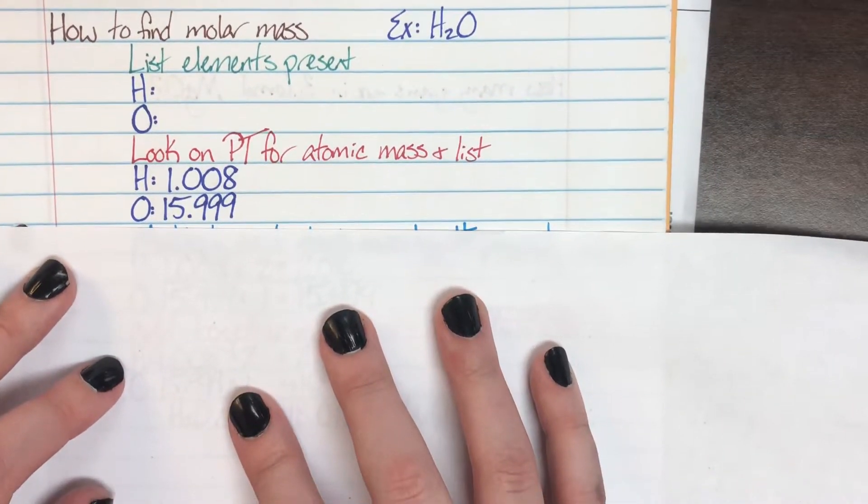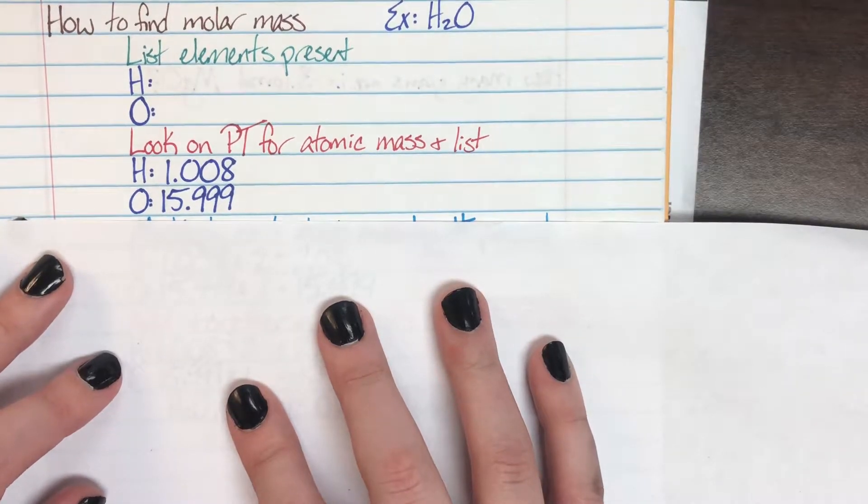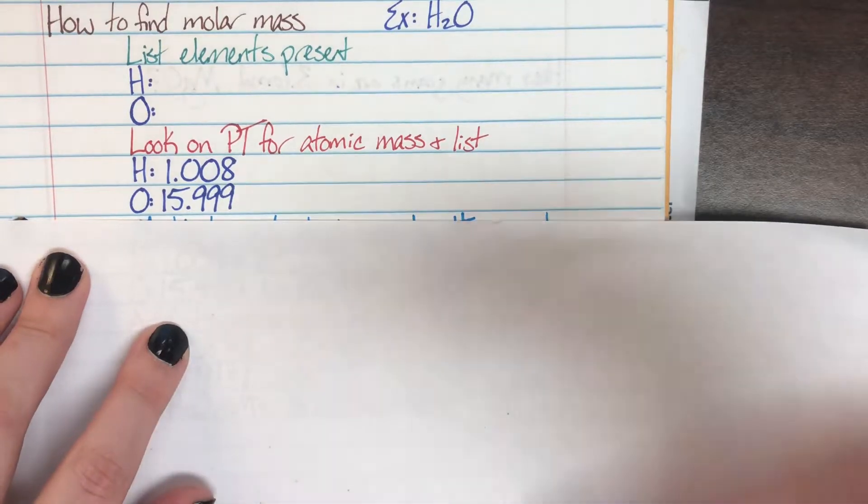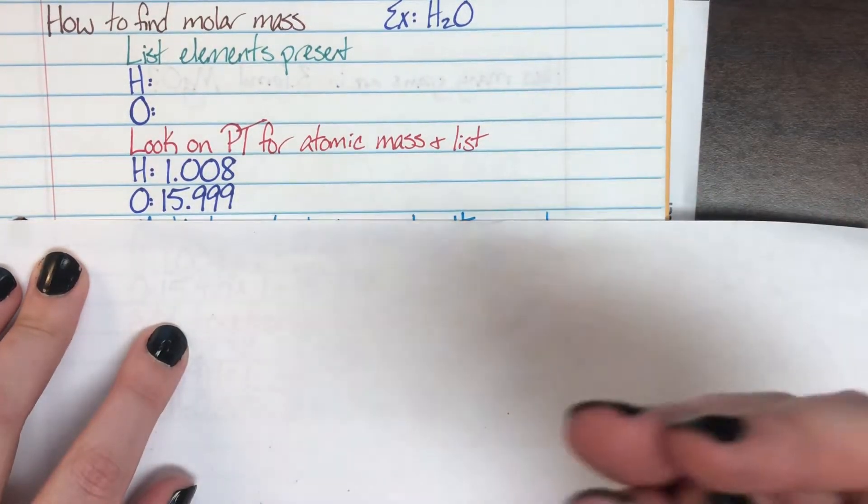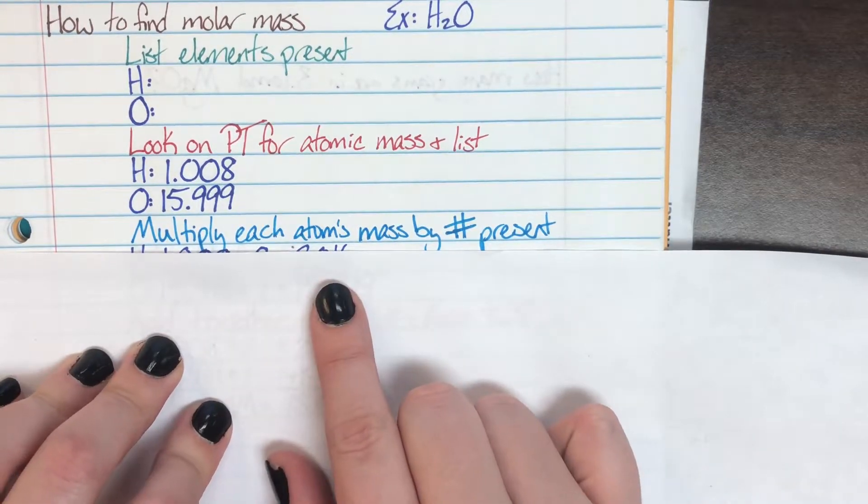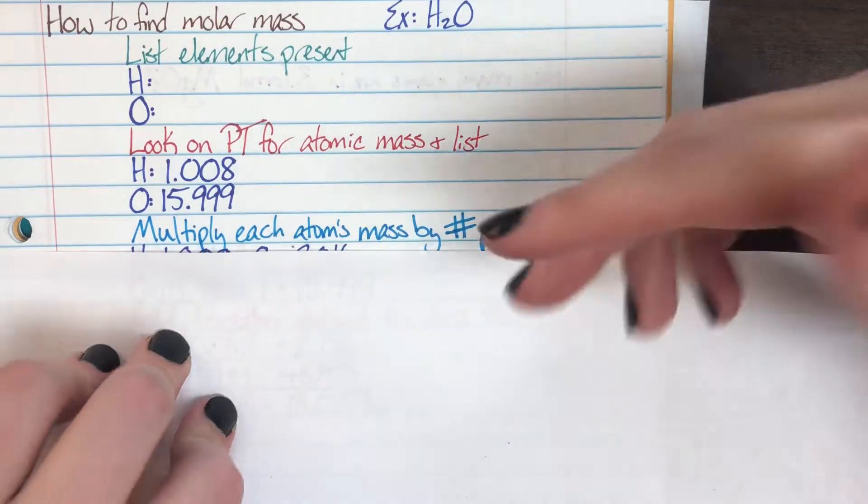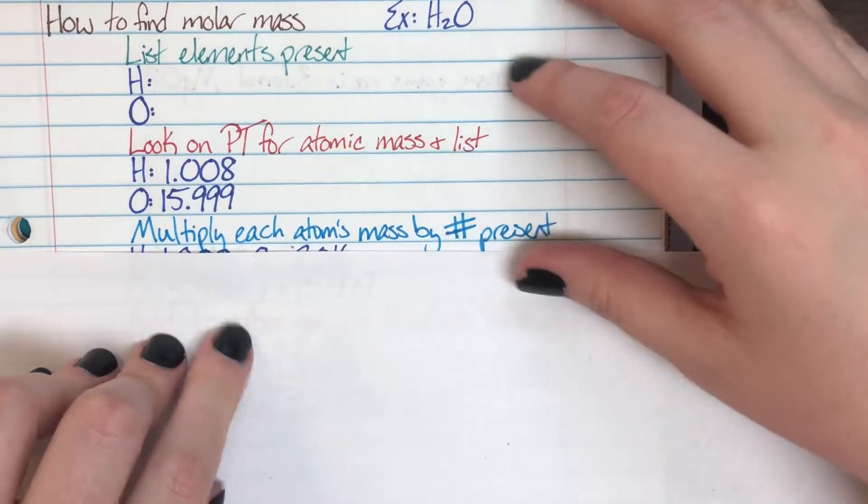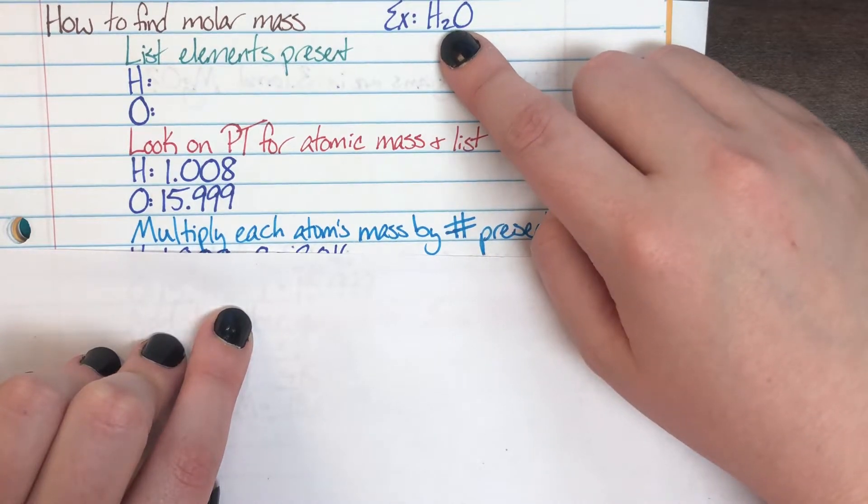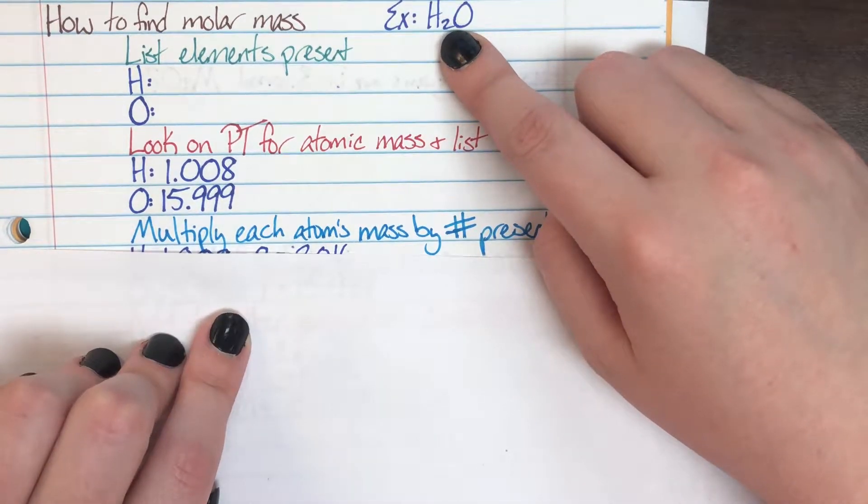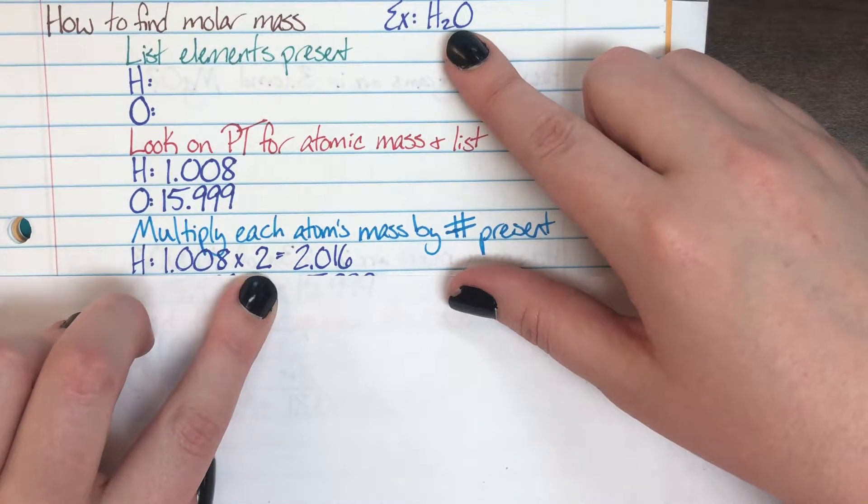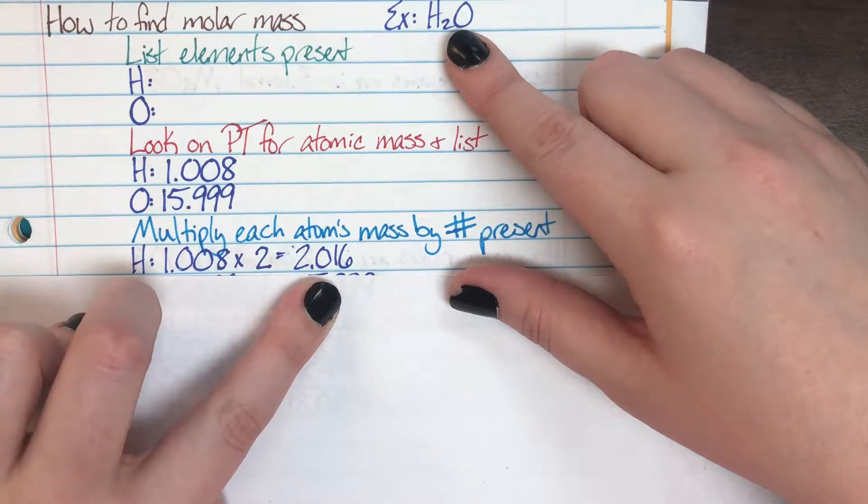Now that I have the masses for the individual elements, I'm going to figure out how much each contributes to the total mass of the compound. I do this by multiplying each atom's mass by the actual number of that element that's in the compound. Okay, so hydrogen—remember that those subscripts are counts—so hydrogen, we see that we have two hydrogens present in H2O, so I'm going to multiply hydrogen's mass by two. And I went ahead and did that calculation there.